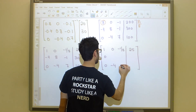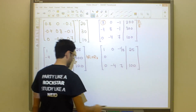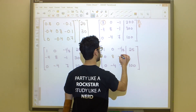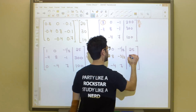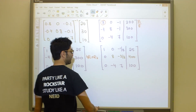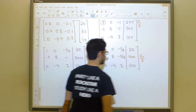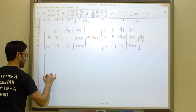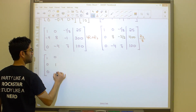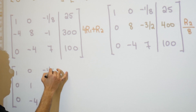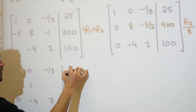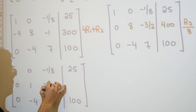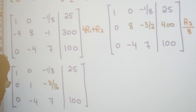Now divide row 2 by 8 to get a leading 1 there. The first and third rows do not change. Dividing the middle row by 8 gives: 0, 1, negative 3/16 | 50. So our matrix now has 1s on the diagonal in positions (1,1) and (2,2), with the third row still at 0, negative 4, 7 | 100.